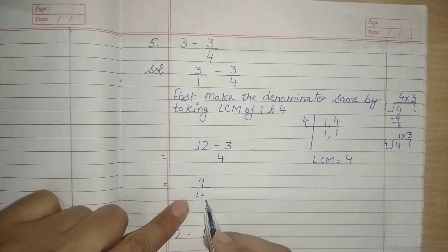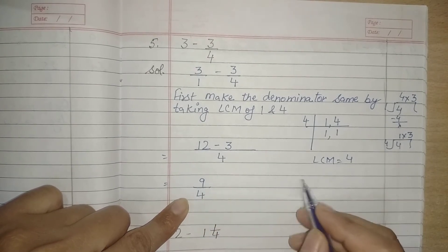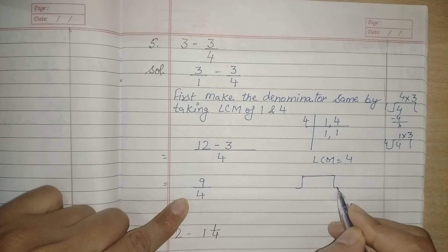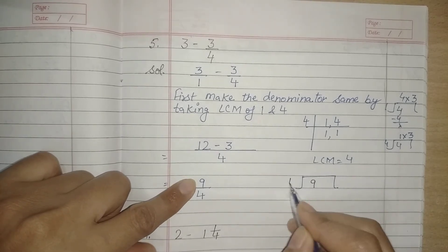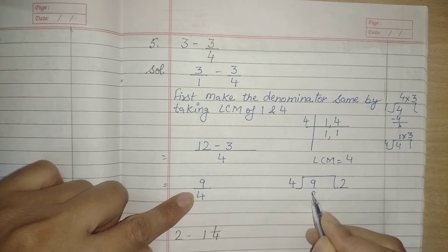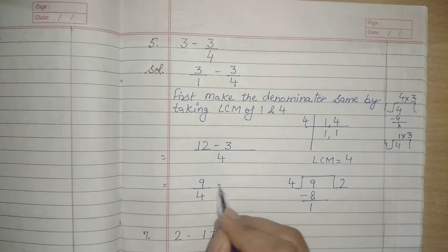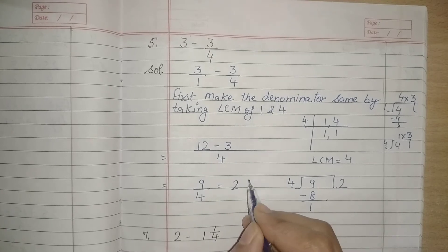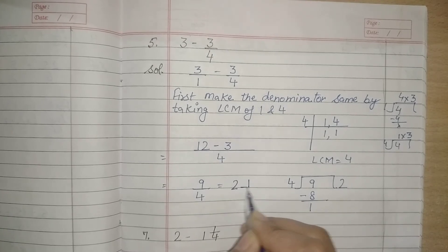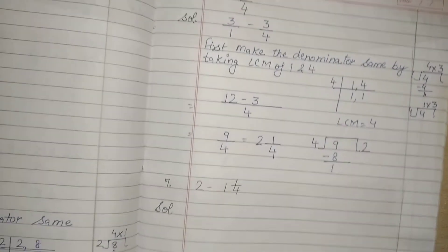It is 9 upon 4. Now this is an improper fraction. So jab bhi humare paas answer improper fraction mein aata hai, toh hum us ko mixed fraction mein convert karte hain. So how we convert: 9 ko 4 se divide karein — 4 twos are 8, minus 1 remainder. Ham quotient as a whole number likhte hain, then remainder as the numerator, aur divisor as the denominator. I hope it is clear.